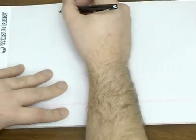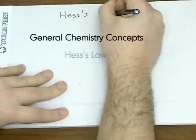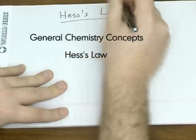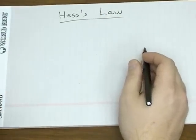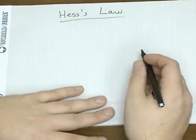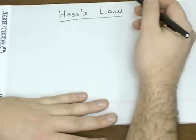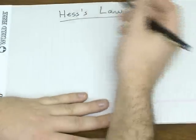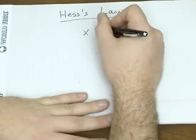So one way to find the enthalpy change for an equation uses what's known as Hess's Law. And the way you use Hess's Law isn't that unlike a common thing you do in algebra.